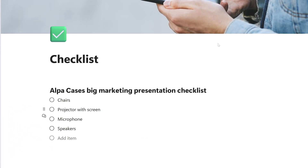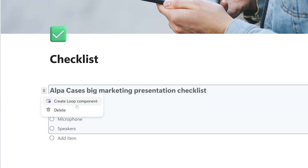Let's use this checklist here as an example. We really want our colleagues to start adding stuff to this checklist. We can have them do this by sending a link to the entire Loop page, but then they'll have to click that link — an extra step that's no longer necessary with Loop components. To turn this component into a Loop component, select the entire checklist including the title, then click on the dots next to your selection and click Create Loop Component.